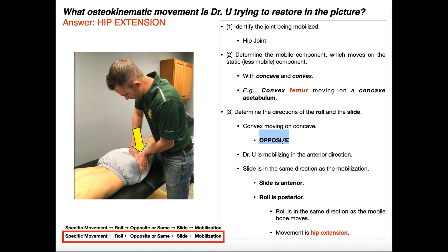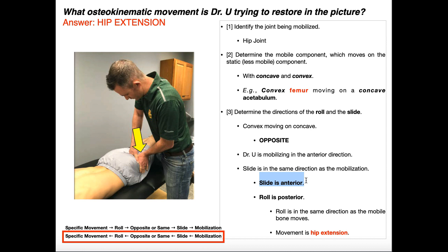We now have pretty much everything we need to solve the question. Look at the picture: what direction is he doing this mobilization? He's hitting the back part of the thigh on the posterior side, but the force is going toward the patient's anterior side — so the mobilization is anterior. Remember, the slide is always in the same direction as the mobilization by definition. So if the mobilization is anterior, the slide is anterior. We just determined that roll and slide are in opposite directions, so if the slide is anterior, the roll is posterior.